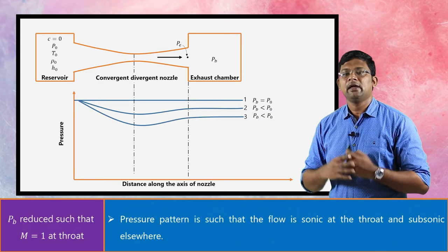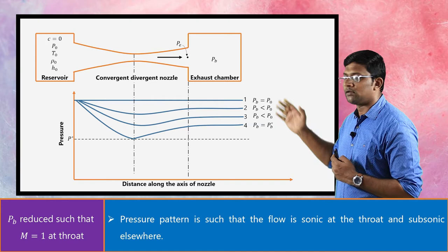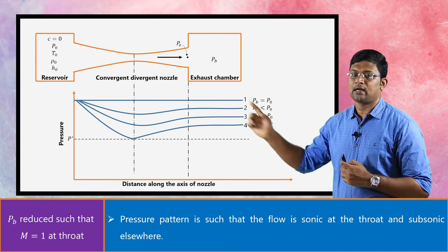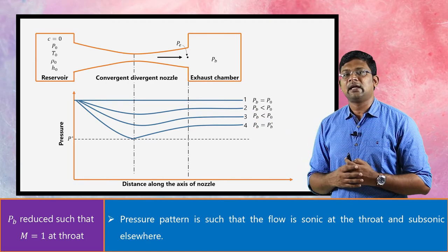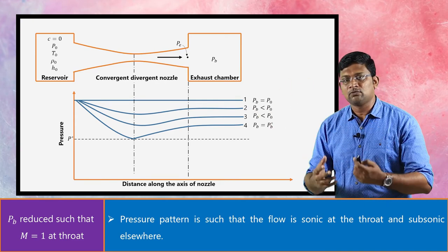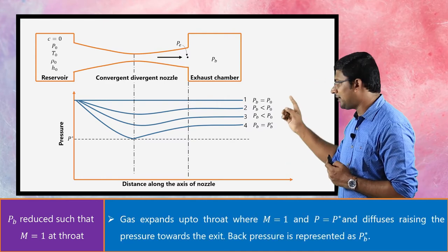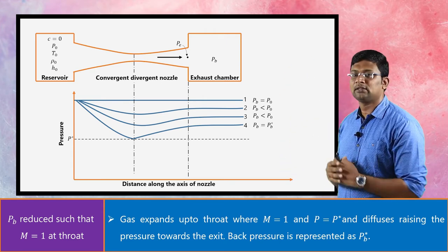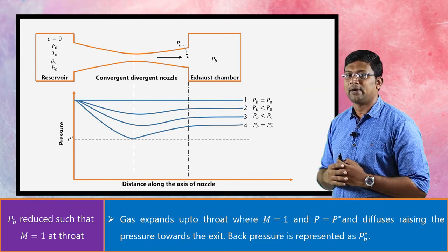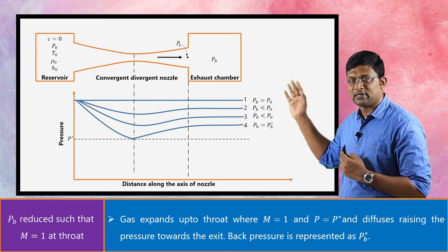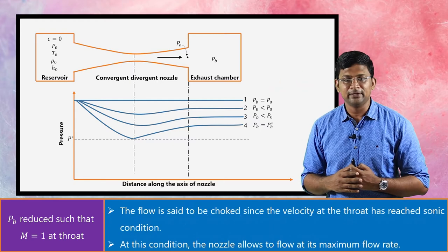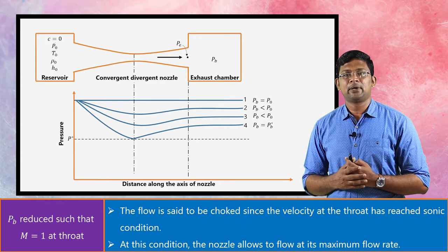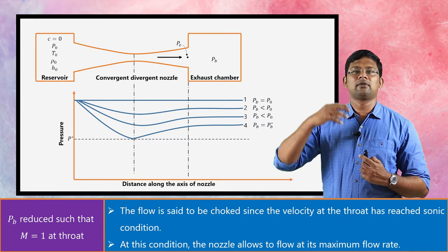We further decrease the back pressure, and finally we observe that at the throat we obtain a Mach number of unity, with the corresponding pressure being the critical pressure p*. However, the flow is subsonic elsewhere — both in the convergent and divergent paths the flow is subsonic while it is sonic at the throat. So the flow accelerates in the convergent path while reducing its pressure, and decelerates in the diverging path while increasing the pressure. Here also pe equals pb. When we obtain Mach number unity at the throat for the first time, we name the exhaust chamber pressure as pb*.